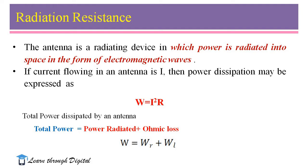Let us consider if we supply high amount of current to the antenna terminals, the total power dissipated by an antenna is W = I²R, where W is the total power and R is the total resistance.